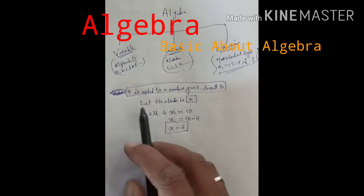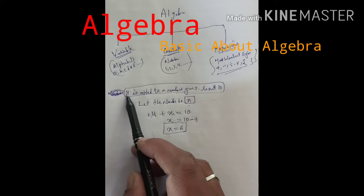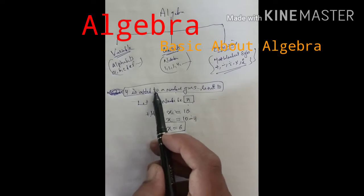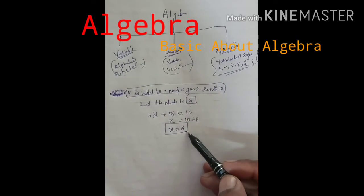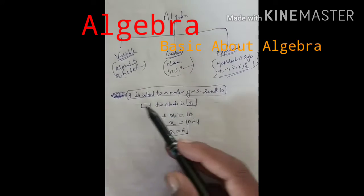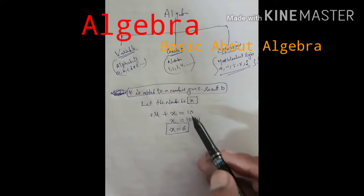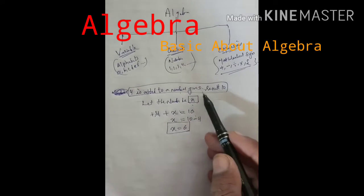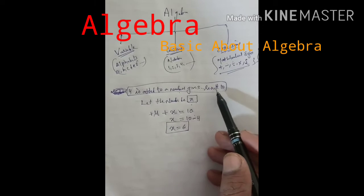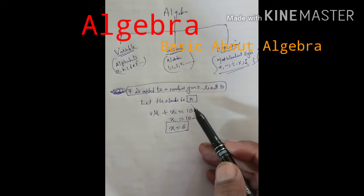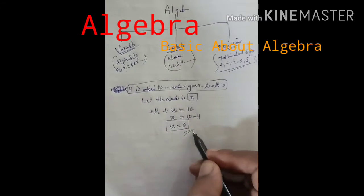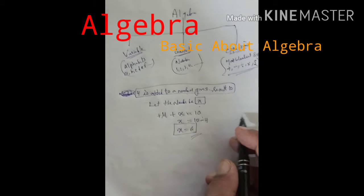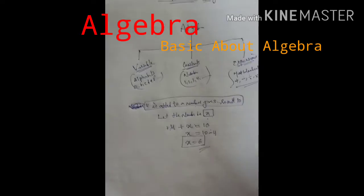अब सीधे question में cross check कर लो। 4 is added to a number — number क्या है? 6। तो 4 is added to 6 gives result 10 — total कितना हो गया? 10। ओके, clear?